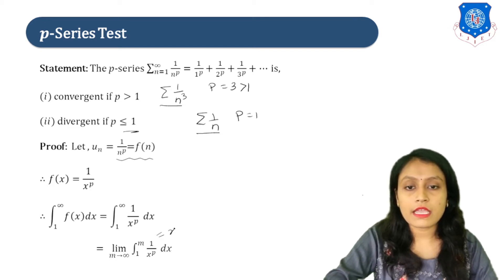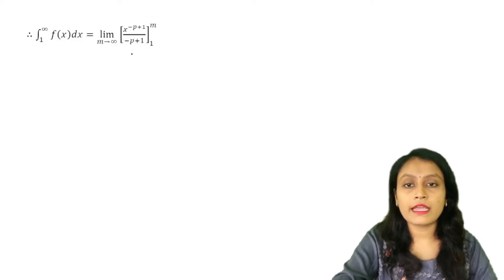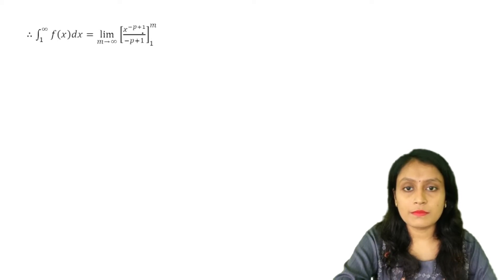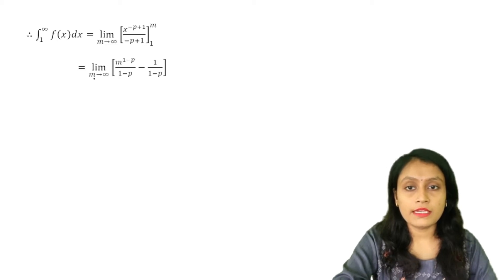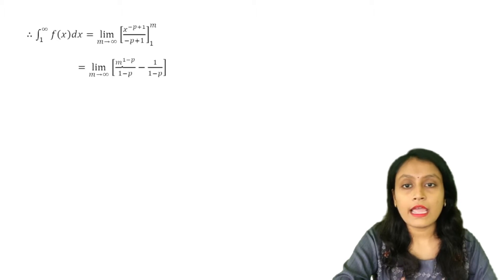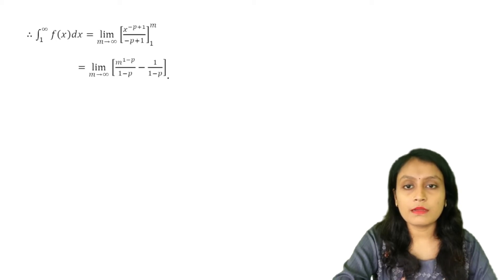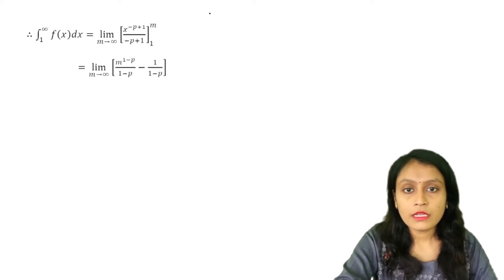We write this as x raised to minus P and integrate it. You will get: limit m tends to infinity of x raised to (minus P + 1) upon (minus P + 1), with limit from 1 to m. Now apply the limit — you will get limit m tends to infinity: upper limit gives m raised to (1 minus P) upon (1 minus P), minus the lower limit 1 upon (1 minus P), for P greater than 1.